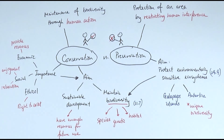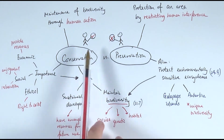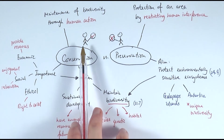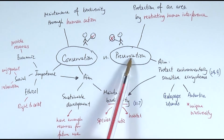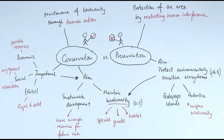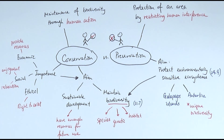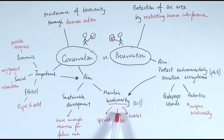Here is a summary of conservation and preservation. Conservation is about maintaining biodiversity through human action. Preservation is about protecting an environment by restricting human interference — that is the major difference. However, the two have a very similar aim: maintaining biodiversity, whether unique or not, and supporting sustainable development to ensure we have resources for the future. Make sure you know the importance of both, which can be split into scientific importance and economic, social, and ethical reasons.